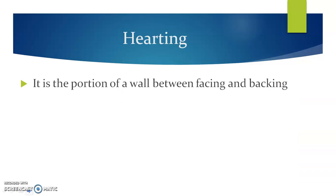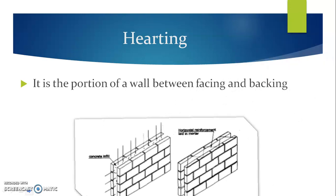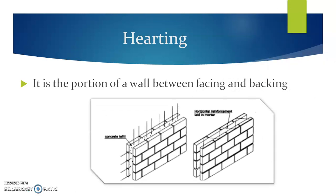Hearting. It is the portion of a wall between facing and backing. Sometimes we use very thick walls. Those thick walls can be made up of different types of building blocks or cavity walls. So it is the portion of a wall between facing and backing. In this figure, you will find that a certain concrete filling is used as hearting in a masonry construction. This hearting might even be of a heat-insulating material, or in certain cases, for economy — particularly in stone masonry — it can be of stone chips.